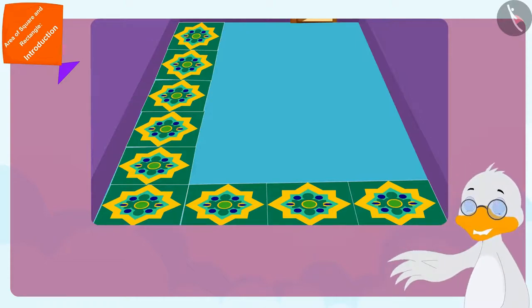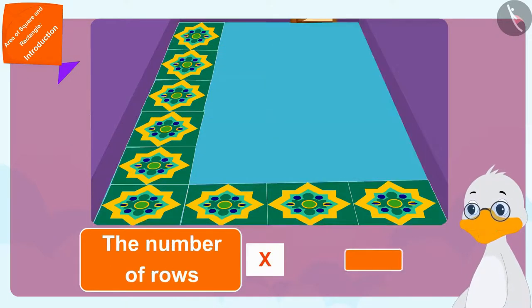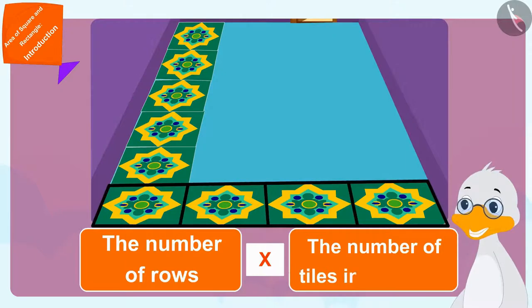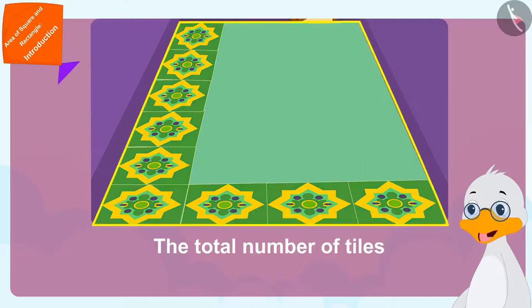Now, it's become very easy. All I need to do is multiply the number of rows by the number of tiles in each row and I will know the total number of tiles needed to cover the floor.